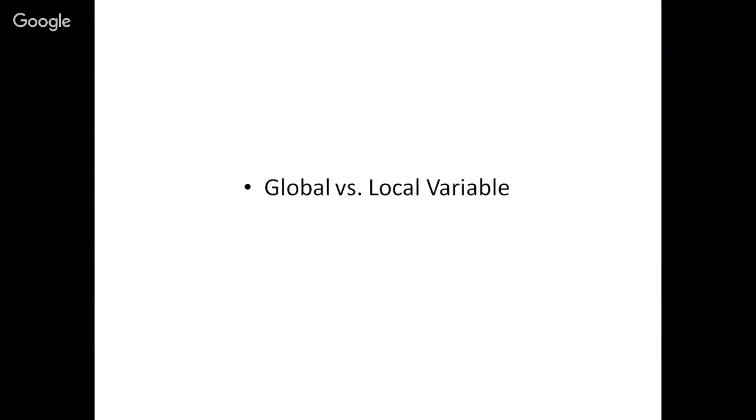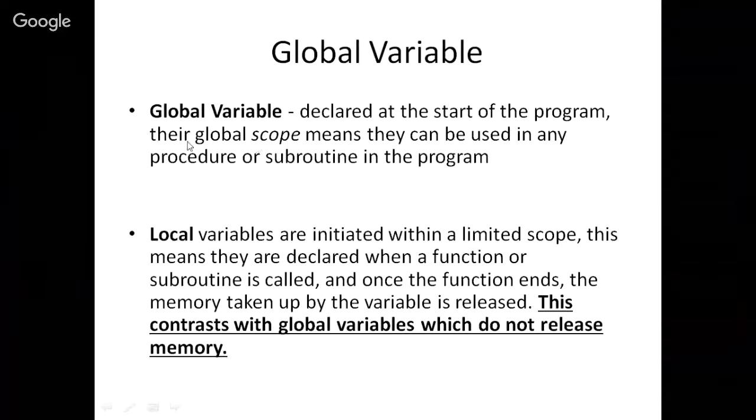So global versus local. Global variable is declared at the start of the program, and their scope is global, which means they can be used in any procedure or subroutine in the program. And in contrast to local variables, global variables do not release memory. So which means, do you remember, the local variables, they're declared within the subroutine, once they're used, and once the function or subroutine ends, the memory taken up in computer by the variable is released. But the global variable resides continually once the program is being executed, and it's not released. So that's all, folks, for now.